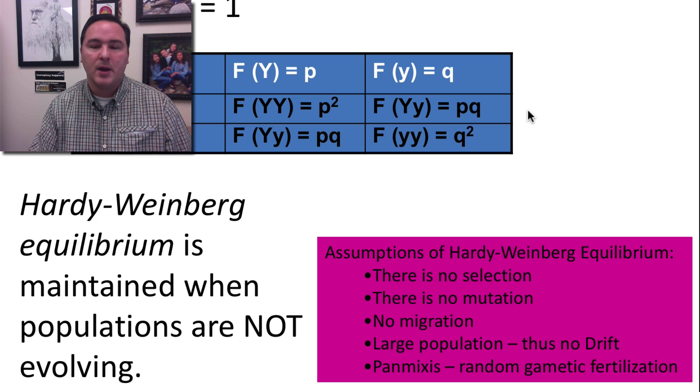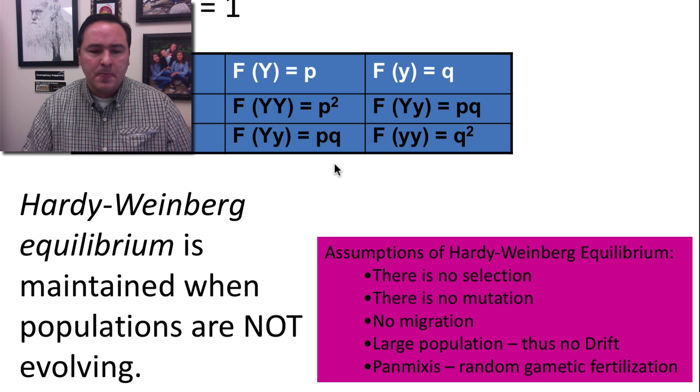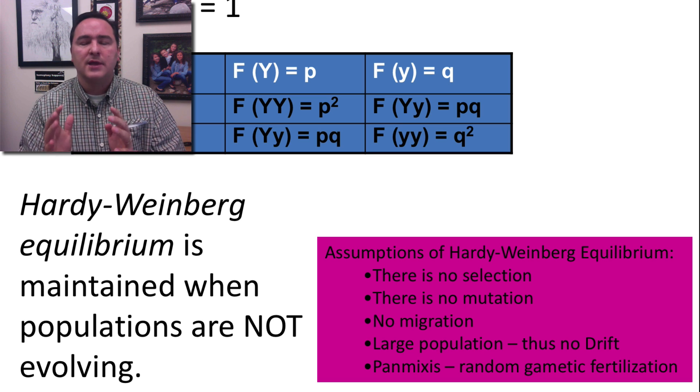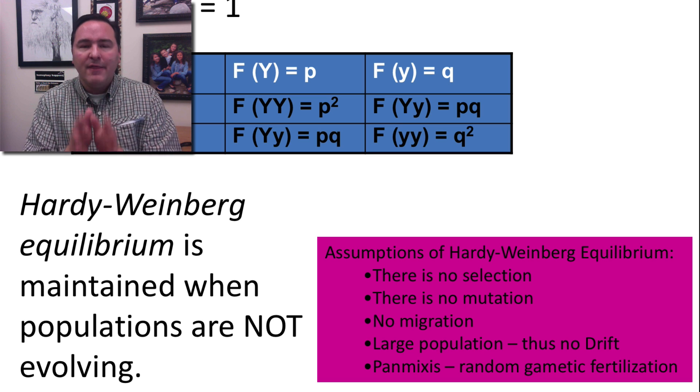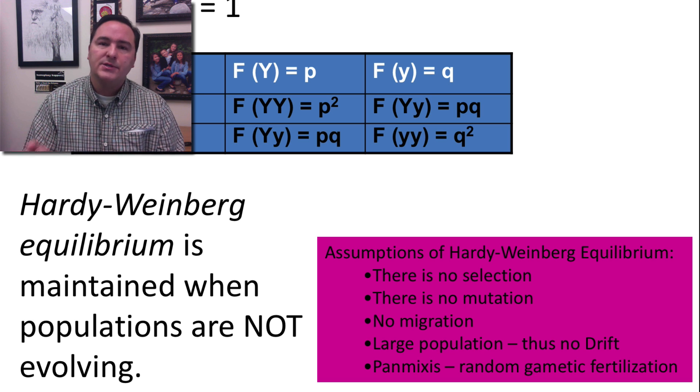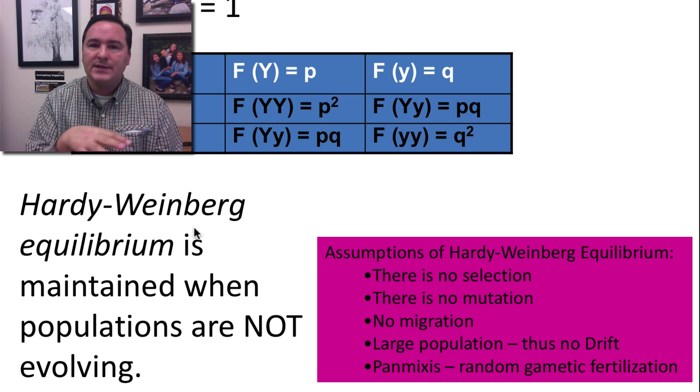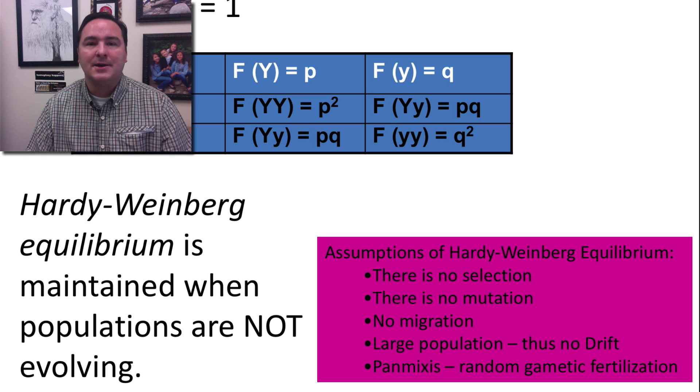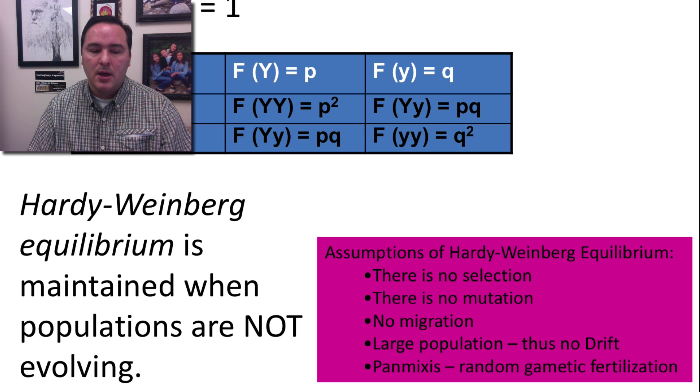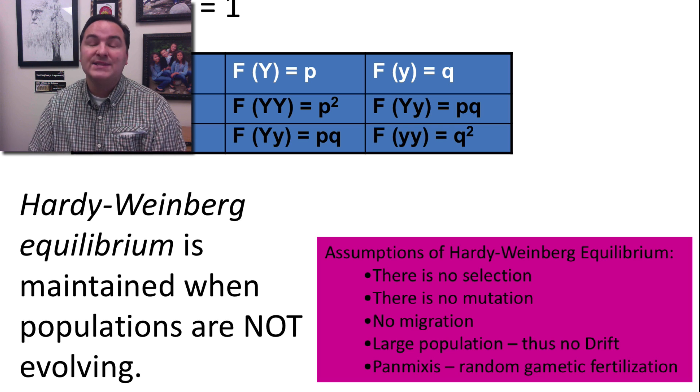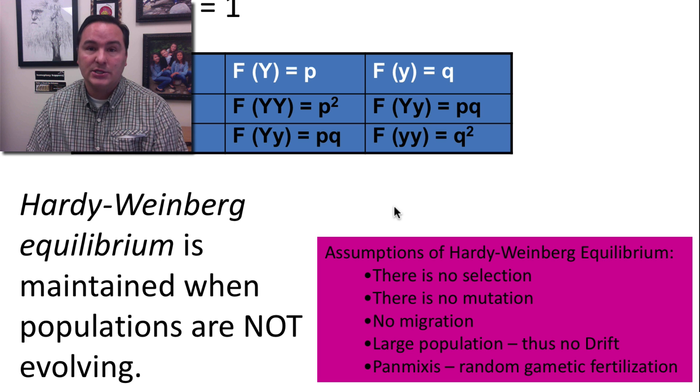So the Hardy-Weinberg equation then also brings the idea that if nothing happens to this population through time, you will not expect then the numbers of genotypic frequencies and allele frequencies to change if nothing's happening at all. And this is when we call the population is in Hardy-Weinberg equilibrium. And therefore the populations are not evolving because the allele frequencies are not changing over time.